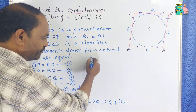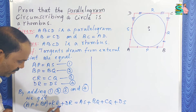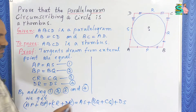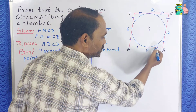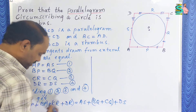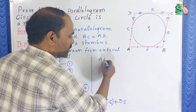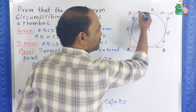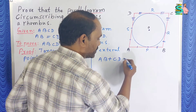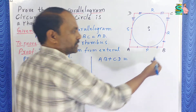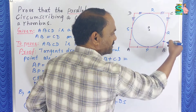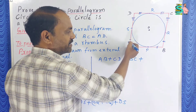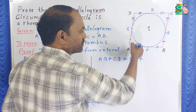On the RHS: AS plus BQ plus CQ plus DS. Now grouping into pairs — AP plus BP equals AB, and CR plus DR equals CD. On the RHS, BQ plus CQ equals BC, and AS plus DS equals AD. So we get: AB plus CD equals BC plus AD.